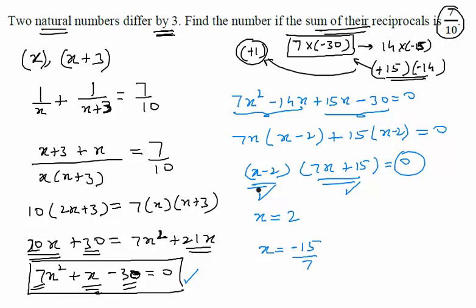So let us go back to our question and see what the question was. The question was 2 natural numbers. But minus 15 by 7 is not a natural number. So obviously we will have to neglect this particular solution.